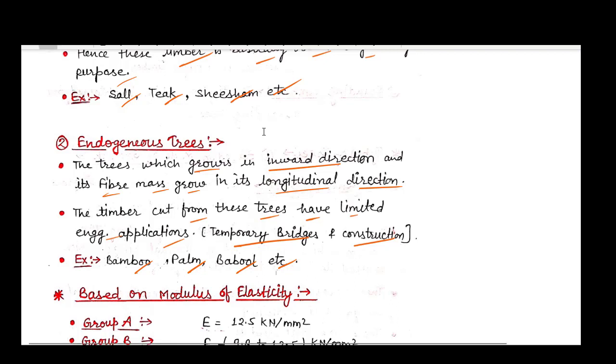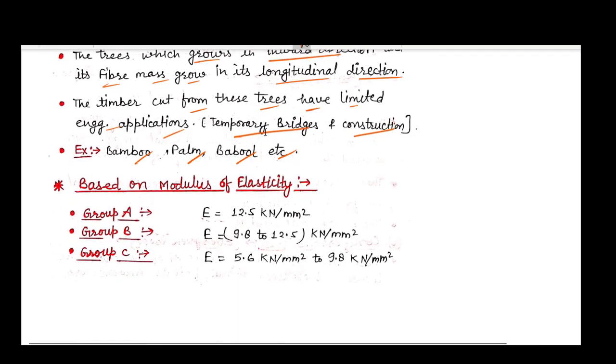They are flexible in nature. Timbers are also classified based on modulus of elasticity. Group A timbers have a modulus of elasticity of 12.5 kN/mm². Group B has values from 9.8 to 12.5 kN/mm². Group C has values from 5.6 to 9.8 kN/mm².